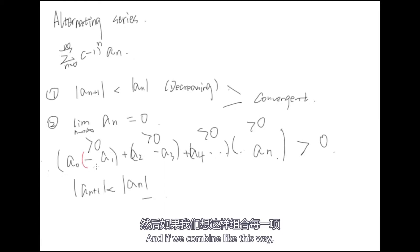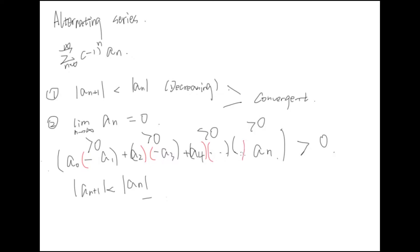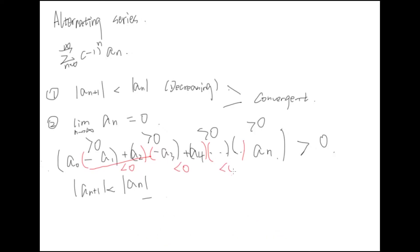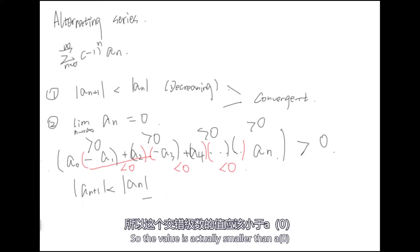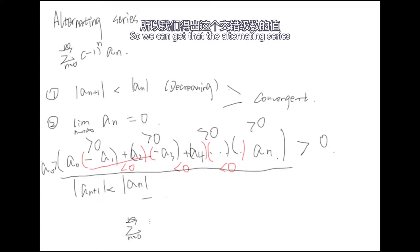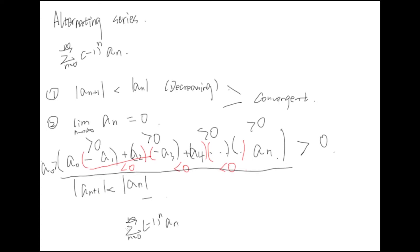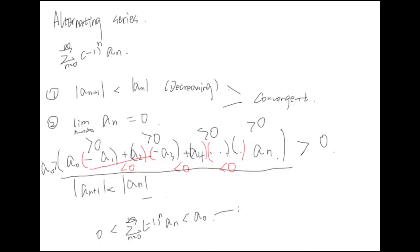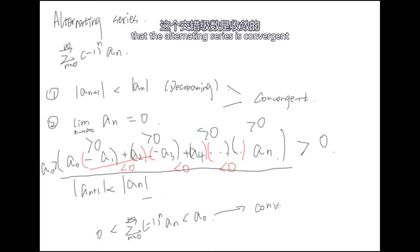And if we combine the terms in another way, we can see that each of those combined terms is smaller than 0. Using both groupings together, we can conclude that the alternating series is convergent.